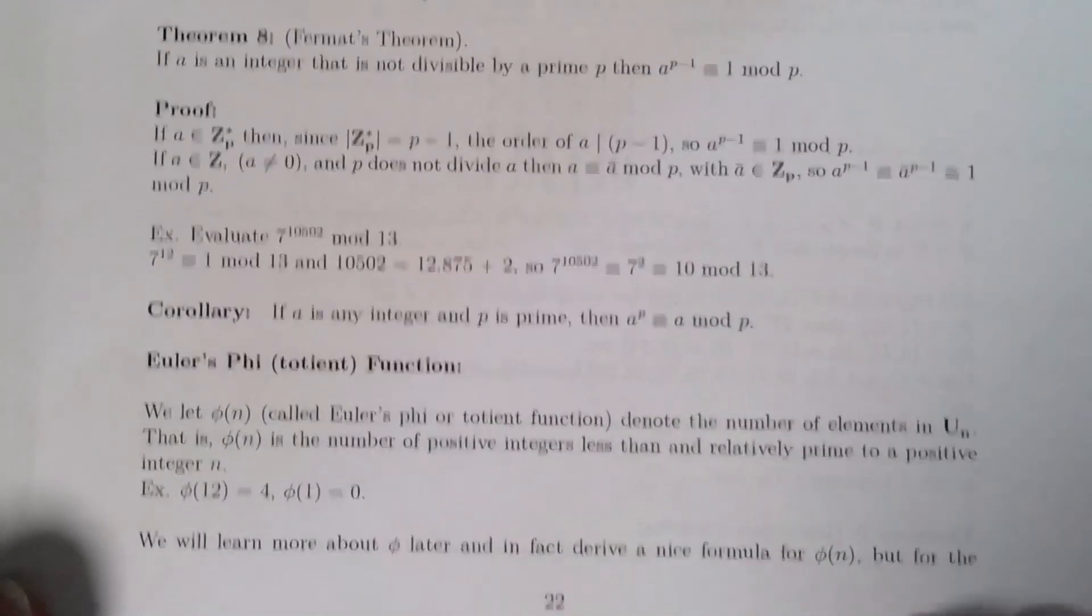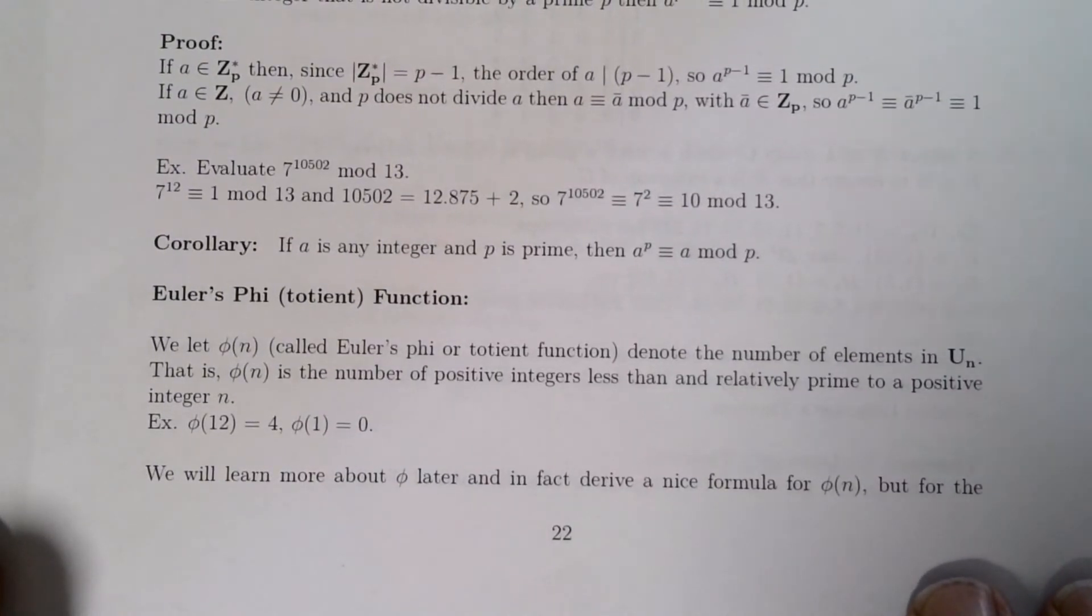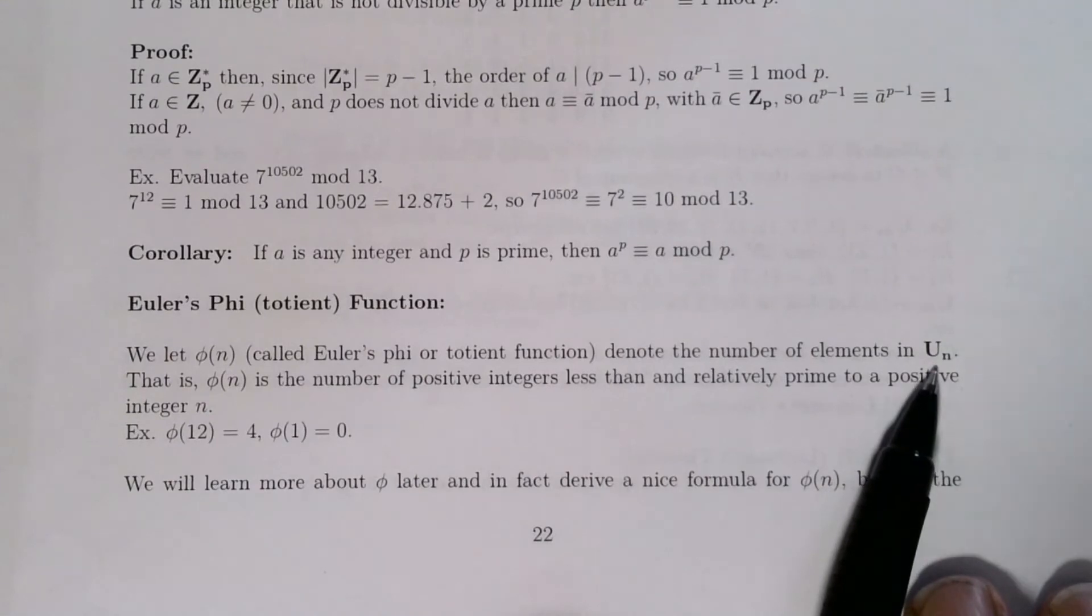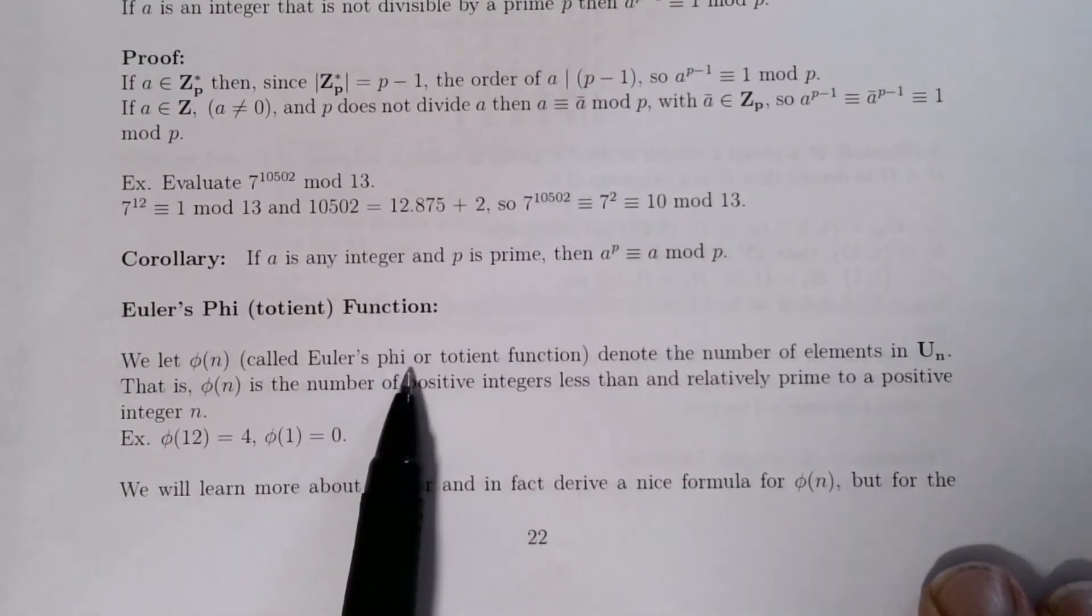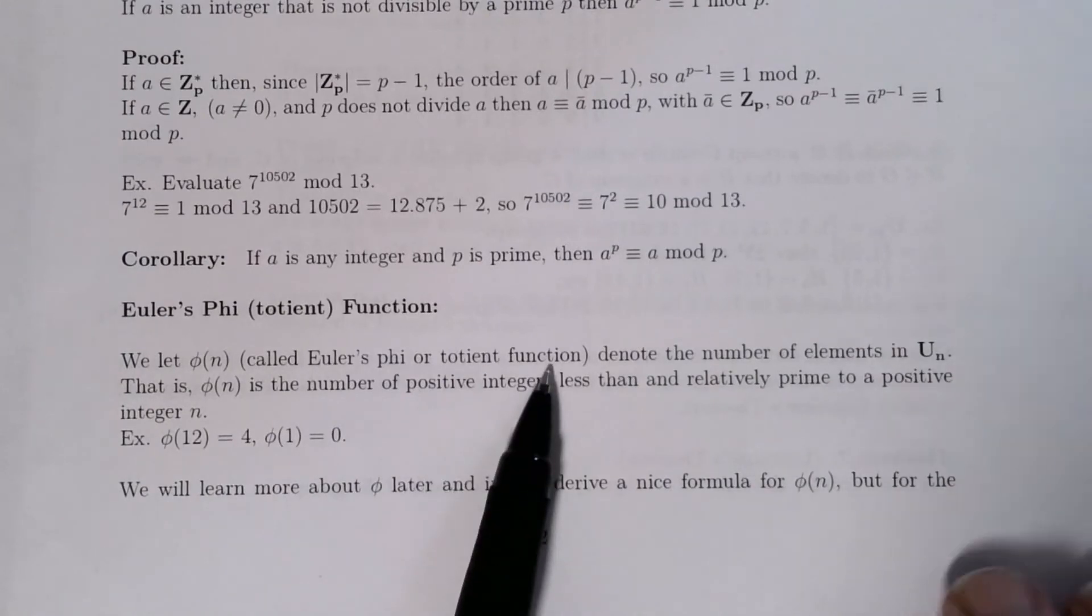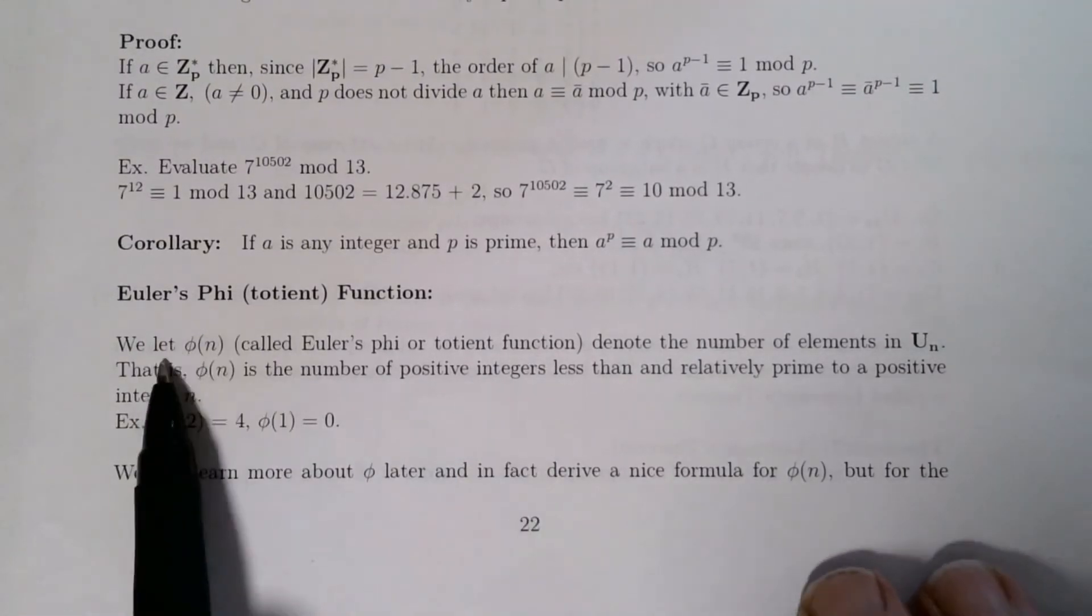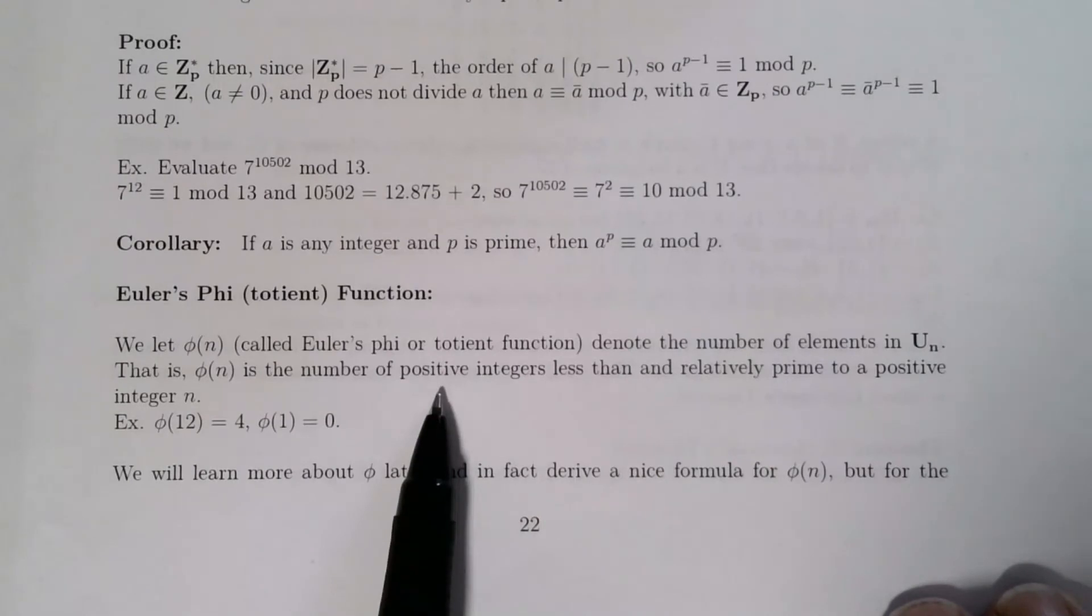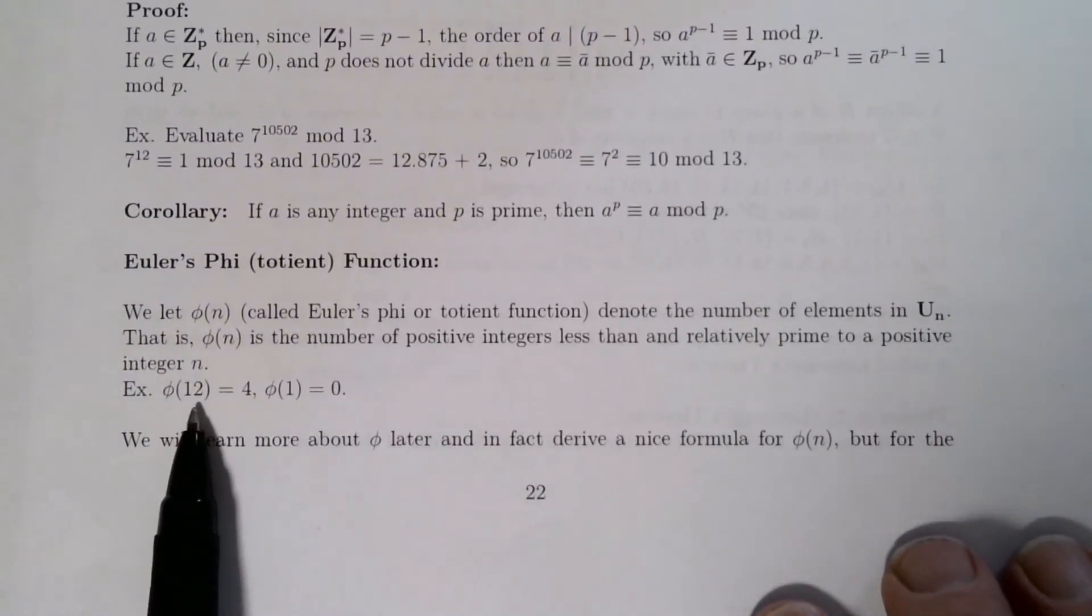Now, I'm going to introduce here Euler's totient function, as we've looked at what happens in the case of U_p, i.e. Z_p star. We now want to look more generally at U_n, the group of units modulo n. And we're going to let φ(n), this is a Greek letter phi, P-H-I. This is called Euler's phi, or Euler's totient function. It turns up in a lot of places in mathematics, not just in number theory, but also in combinatorics and elsewhere. So φ(n) denotes the number of elements in U_n. That is, φ(n) is the number of positive integers less than and relatively prime to a positive integer n.